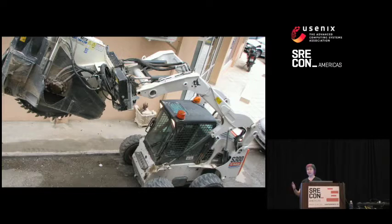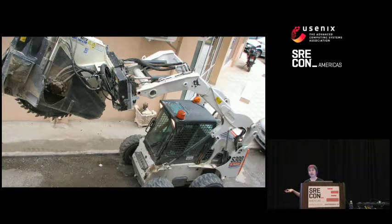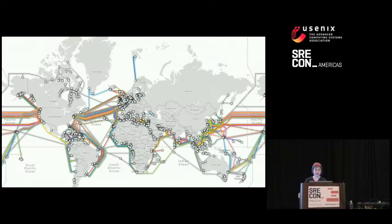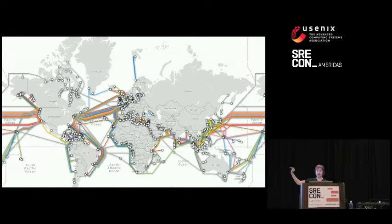We've seen the first two types of fiber over land. But oceans are 71% of the Earth's area, and we don't want to have a North American internet and a European internet — that would just be sad. And the European one would be so much classier than ours. So, undersea or transoceanic fiber. This is the actual map of all of the undersea fiber cables in the world. If your traffic is leaving the continent, it's going over one of these cables.